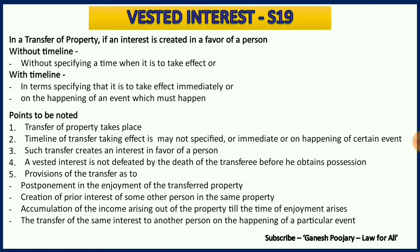Then comes the scenario with a timeline, which has two options. The first is that it takes effect immediately. Imagine A transfers property in favor of B for life and then to his unborn son C. If it is mentioned that C will get absolute property at the age of 10, then immediately after the birth of C, he gets vested interest. From age 0 to 10 he will have vested interest over the property, and once he attains the age of 10 he will get the property. That is taking effect immediately.